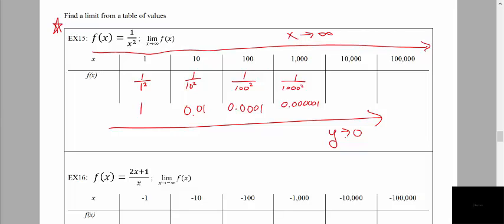The y values are positive, hovering right above y = 0. This leads to an important theorem: when we have a constant in the numerator of a fraction and the denominator continues to increase, the value of the fraction gets smaller and smaller, approaching 0. We'll refer back to this example in the next video.